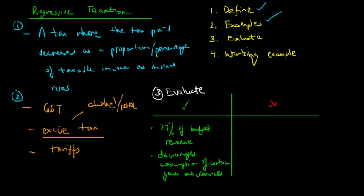The government wants to decrease the consumption of petrol because of the carbon dioxide emissions and pollution involved with consuming petrol. So they add an excise tax onto it to discourage people from consuming petrol and minimize these negative externalities. That's a positive aspect of regressive taxation.